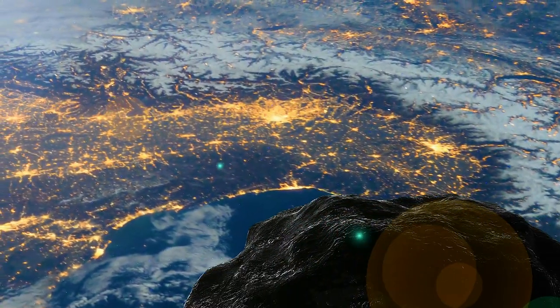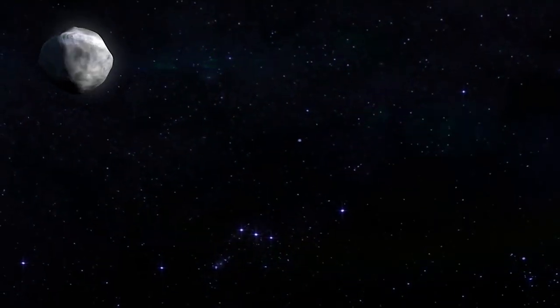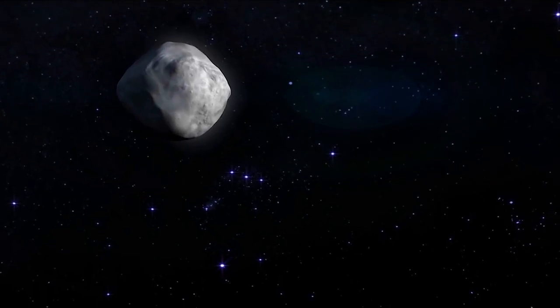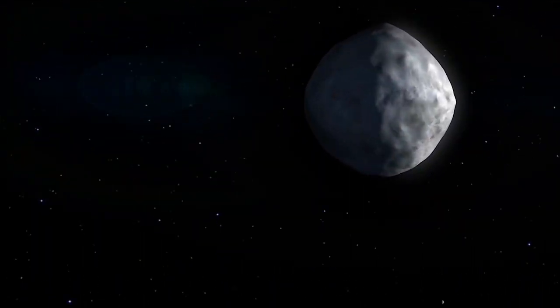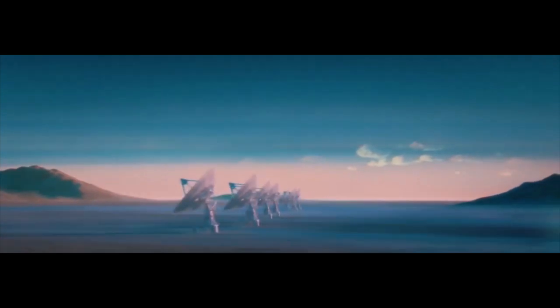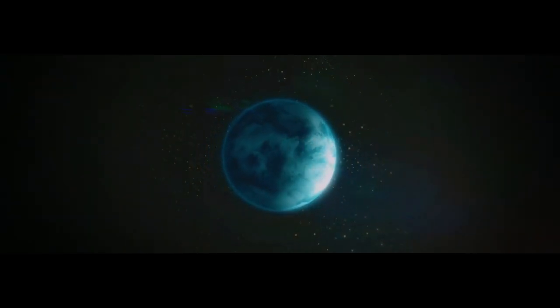But how close is close? A near-Earth object is defined as an object that could pass by our planet within 30 million miles. NASA begins to keep close watch on objects that could pass within 5 million miles of Earth. To put that in perspective, our Moon is only 238,900 miles away.